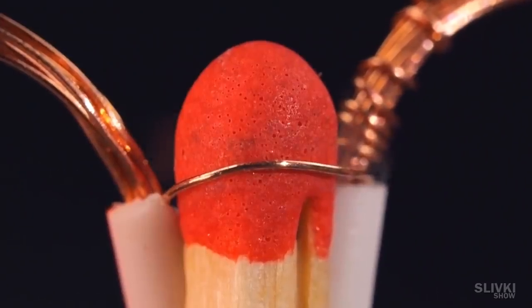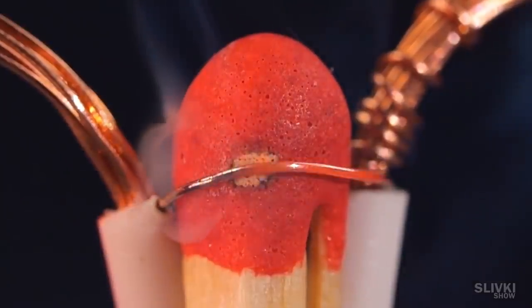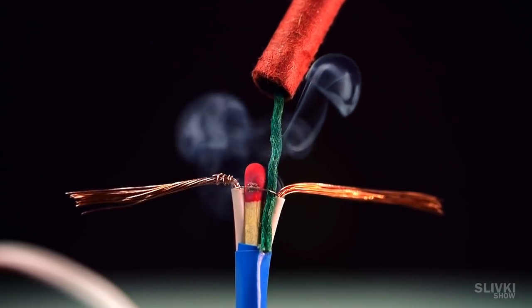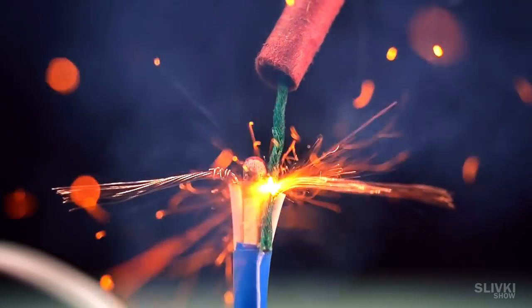The electricity flowing through the thin wire causes it to heat up to a point where the heat starts to transfer to the match. From the high temperature a chemical reaction begins to take place, releasing even more heat and the match lights up.